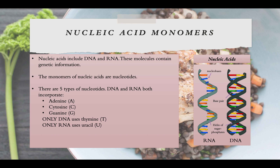Now let's talk about nucleic acid monomers — the last of the four molecules covered in this chapter. Nucleic acids include DNA and RNA. DNA molecules contain genetic information. The monomers of nucleic acids are called nucleotides, and there are five types. Both DNA and RNA have adenine, cytosine, and guanine. But DNA uses thymine, while RNA uses uracil instead. So in RNA there is no thymine, and in DNA there is no uracil — each is specific to either DNA or RNA.